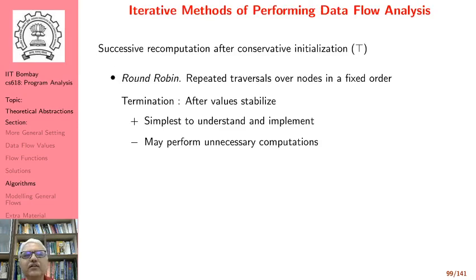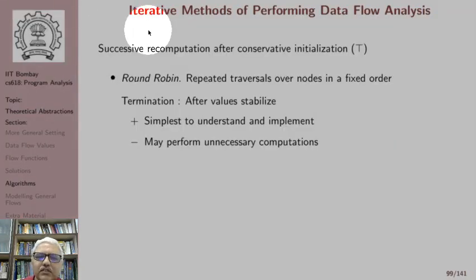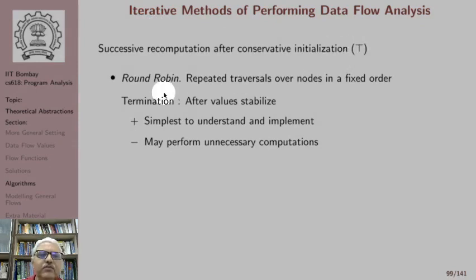We will look at iterative methods for performing data flow analysis. There are other methods called elimination methods, modeled after Gaussian elimination, but they have not been found to be practically efficient, so we will restrict ourselves to iterative methods. They essentially involve successive recomputation after a conservative initialization, and this conservative initialization is the top value of the lattice. The first method we look at is the round robin method, which is the method we have been using.